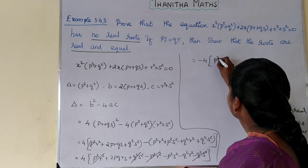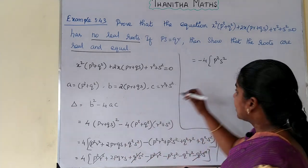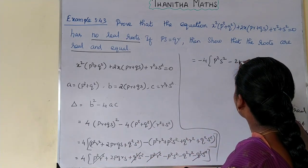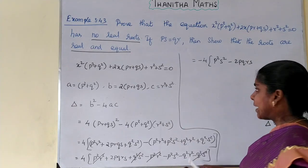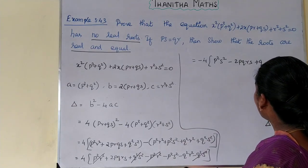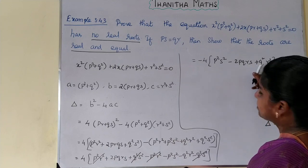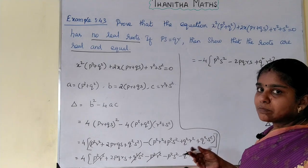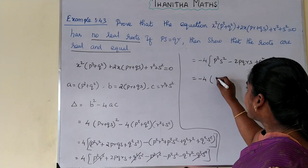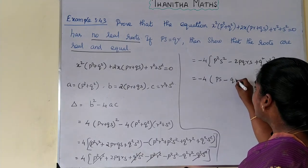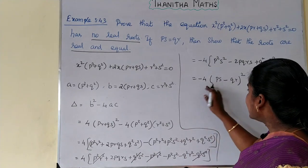We have p²s² - 2pqrs + q²r², which is in the form a² - 2ab + b² = (a-b)². So delta equals -4(ps - qr)². This is less than 0 because (ps-qr)² is a perfect square, so it is always non-negative, and multiplying by -4 makes it negative.